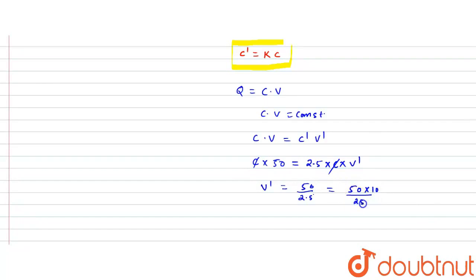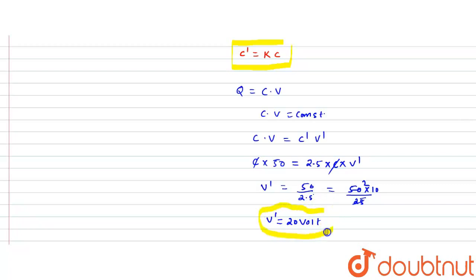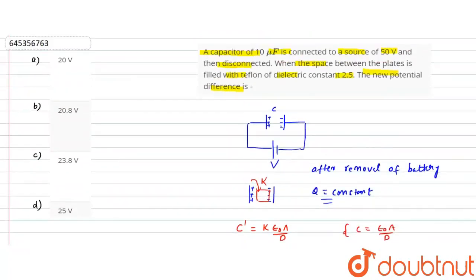This can be written as 50 × 10 / 25, which gives V' = 20 volts. So the new voltage after filling with the dielectric is 20 volts. The answer is 20 volts.